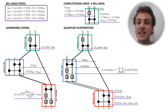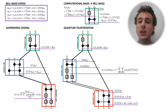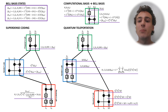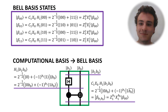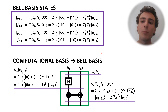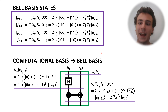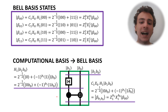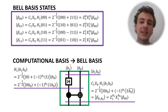Before we go into the details of these visualizations, we're going to need to introduce some useful notation for the Bell basis states. In this purple box, you can see the four Bell basis states. And below the purple box, you can see a quantum circuit diagram which shows us how to go from the computational basis to the Bell basis.